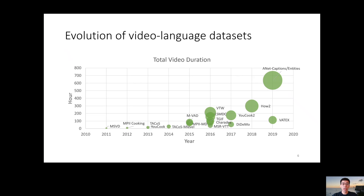Here's how the video and language datasets have evolved over time. Over the last decades, as we can see, there has been some progress in the field in terms of total video duration. However, even by the end of early 2019, the largest public dataset only had 600 hours worth of videos. As a comparison, 600 hours worth of videos are uploaded to YouTube alone every minute, so there are tremendous amounts of video resources remaining untouched.